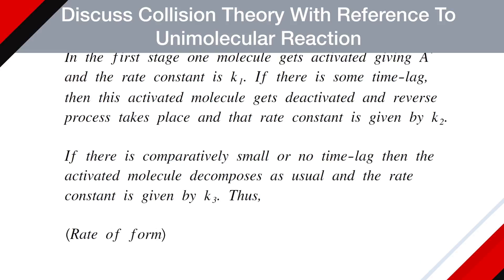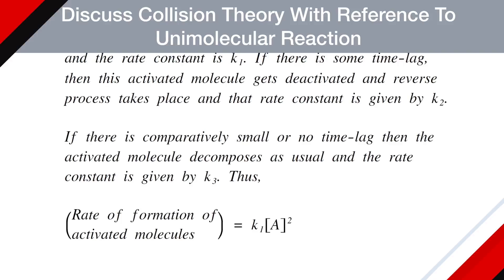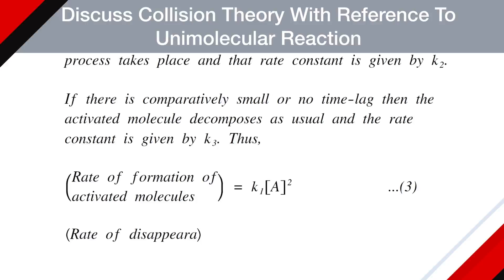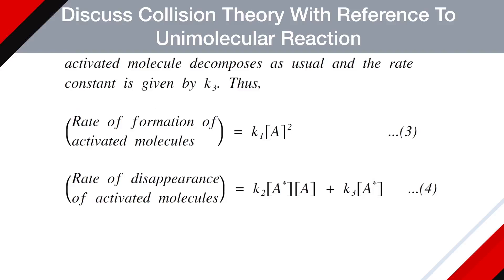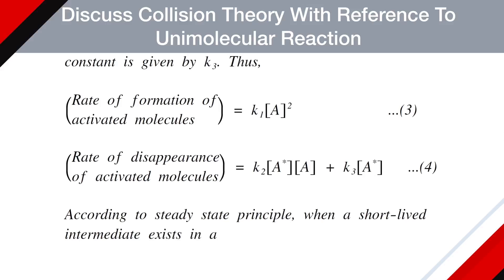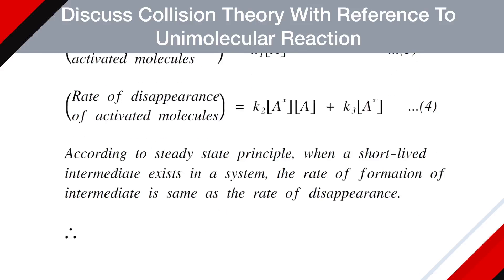The rate of formation of the activated molecule equals K1 times the concentration of A squared (equation 3). The rate of disappearance of the activated molecule is K2 times [A*] times [A] plus K3 times [A*] (equation 4), since A* can follow both the reverse and forward reactions. According to the steady-state principle, when a short-lived intermediate exists in a system, the rate of formation equals the rate of disappearance.